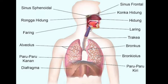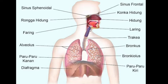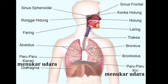Kita punya bronkus. Bronkus berfungsi sebagai alat untuk menyalurkan udara menuju alveolus. Manusia memiliki dua paru-paru, ada paru-paru kanan dan paru-paru kiri. Fungsinya yaitu untuk menukar udara — udara yang masuk adalah oksigen dan yang keluar dari tubuh manusia disebut karbon dioksida.